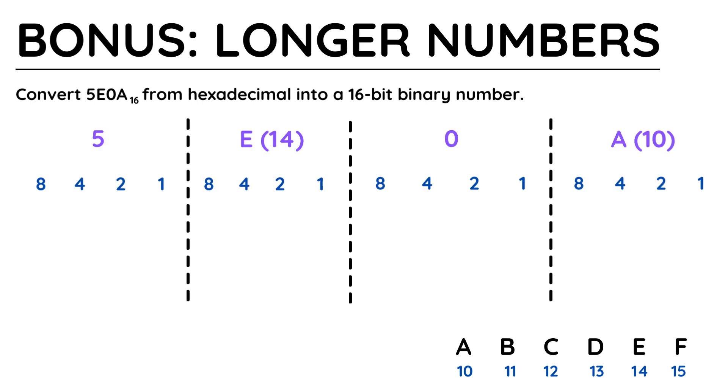I've started by writing out the 1, 2, 4, 8 numbers for each character that I need to represent. I've written the number above them each as well. Then I just need to convert them one by one.